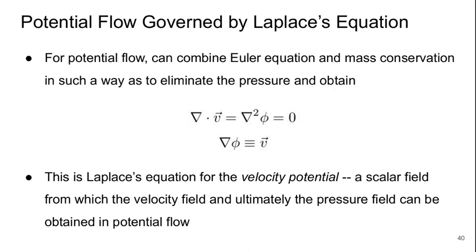Potential flow is governed by Laplace's equation. If we combine the Euler equation and the mass conservation equations to eliminate the pressure terms, we obtain a simple equation: from the fact that the divergence of the velocity must be zero, we can write this as the gradient squared of the velocity potential is zero. The gradient of the velocity potential is defined to be the velocity field. This is a scalar field from which the velocity field and ultimately the pressure field can be obtained in potential flow.